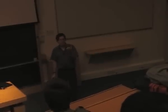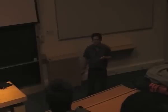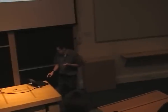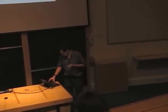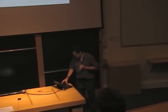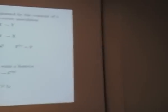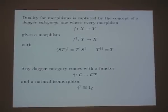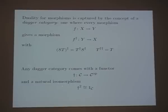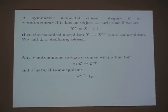Whenever you have a Hilbert space, there may be a category hiding in it — what I call decategorifying your category, squashing it down. This other kind of duality is captured by the concept of a dagger category: one where every morphism from X to Y gives a morphism f† from Y to X, with obvious properties. Any dagger category will have a functor dagger from C to C-opposite such that doing it twice returns where you started.